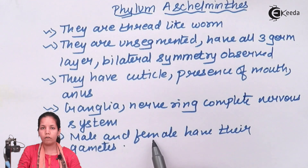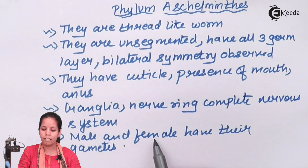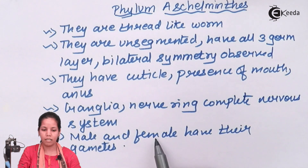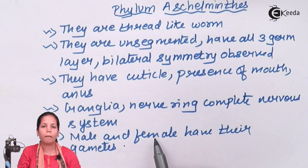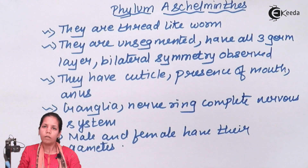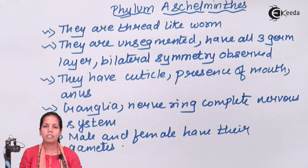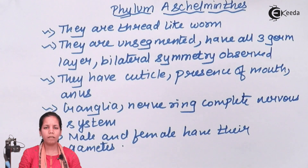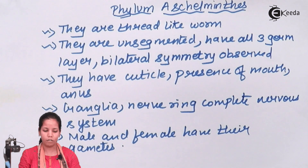Male and female reproductive tracts in these organisms have their own reproductive gametes, and when these gametes meet, reproduction takes place. They can occur in sea regions, sometimes in moist conditions, or even in terrestrial environments.